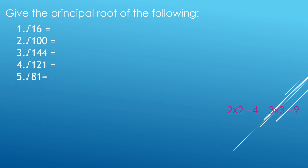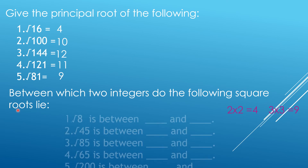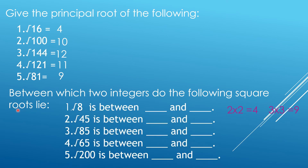So I want you now to give the principal root of the following — the positive square root. And also, between which two integers do the following square roots lie? I have five numbers here. Number one: between 2 and 3. Number two: between 6 and 7. Number three: the square root of 85 is between 9 and 10. Number four: between 8 and 9. And the square root of 200 is between 14 and 15. You can list down the perfect squares so it will be easy for you to determine the perfect squares before and after the given non-perfect square.